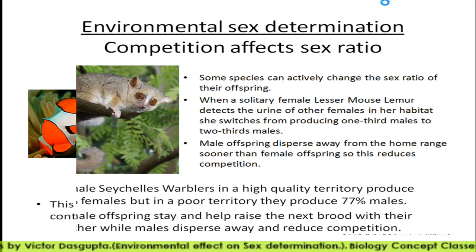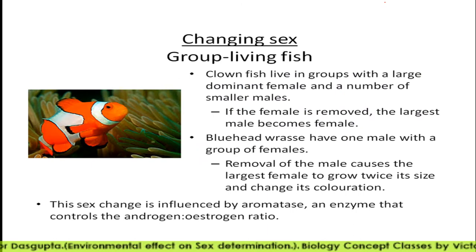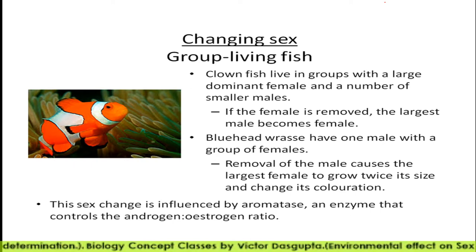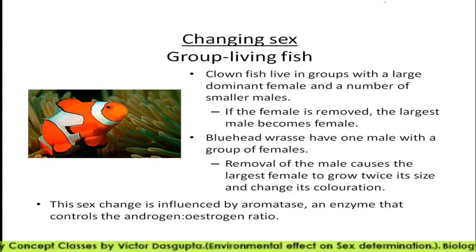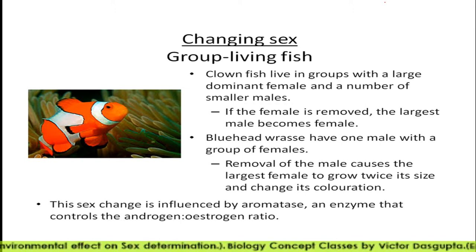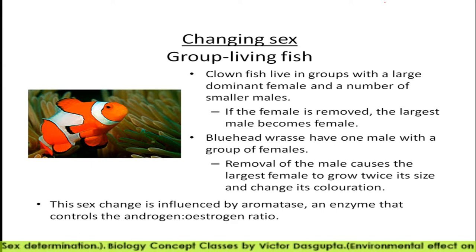Group living fishes: clownfish is a group living fish with a large dominant female and a number of smaller males. If the female is removed, the largest male changes sex to become female. Blue-headed wrasse have one male with a group of females. Removal of the male causes the largest female to grow twice its size, change its coloration, and become male.